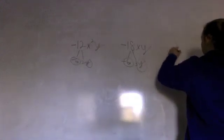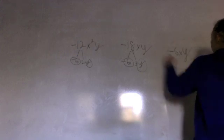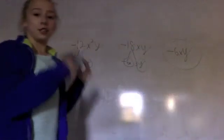So the answer is -6xy. That's how you find a GCF with variables.